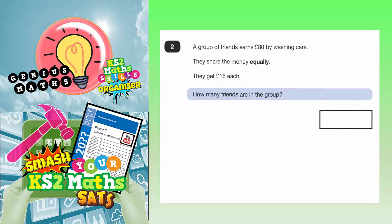A group of friends earns £80 by washing cars. They share their money equally. They get £16 each. How many friends in the group?